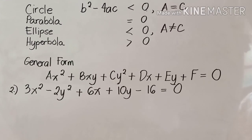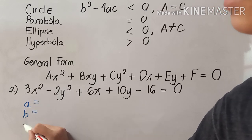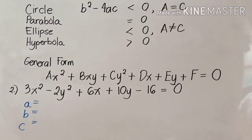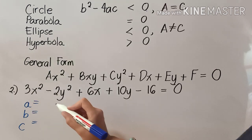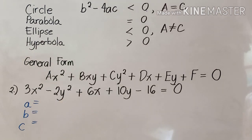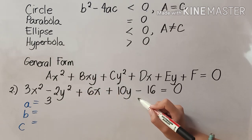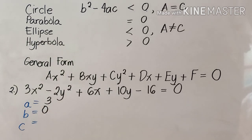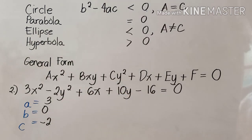Let us now proceed to example number 2: 3x squared minus 2y squared plus 6x plus 10y minus 16 equals 0. We will get the values of a, b, and c. In the general form, x squared is beside a, and in our given, 3 is beside x squared, so a equals 3. B is beside xy, but xy does not appear in our given, so b equals 0. C is beside y squared, and in our given, that is negative 2, therefore c equals negative 2.